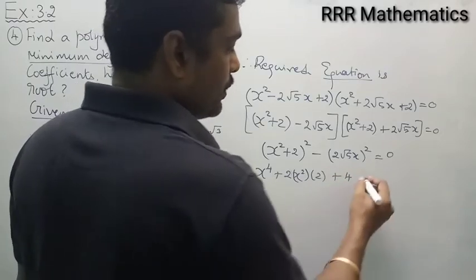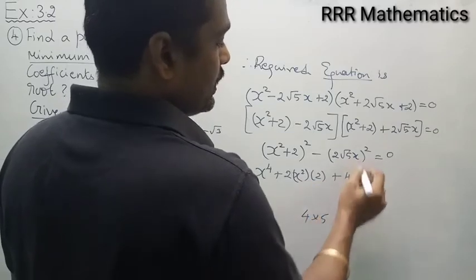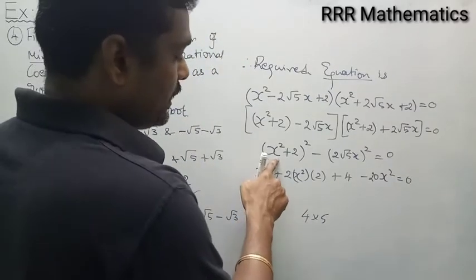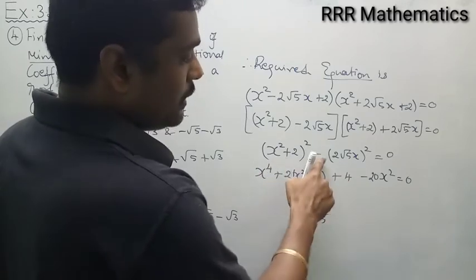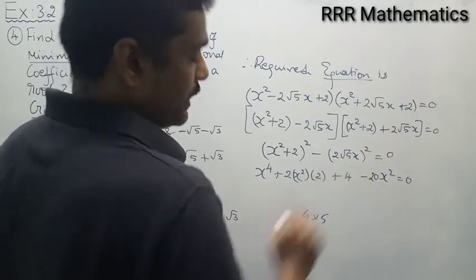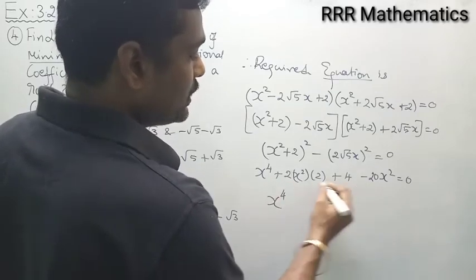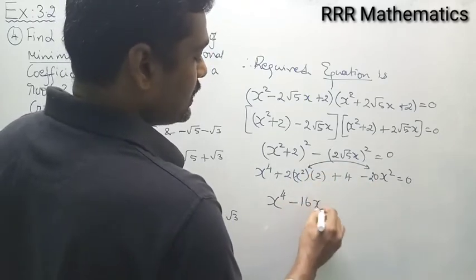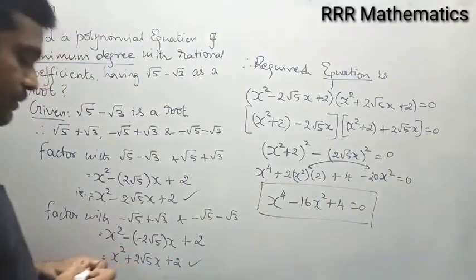Expanding: (x² + 2)² = x⁴ + 4x² + 4, and (2√5·x)² = 4 × 5 × x² = 20x². So we get x⁴ + 4x² + 4 minus 20x² = 0. Combining like terms: 4x² - 20x² = -16x². That gives x⁴ - 16x² + 4 = 0, which is the required equation. Is it clear?